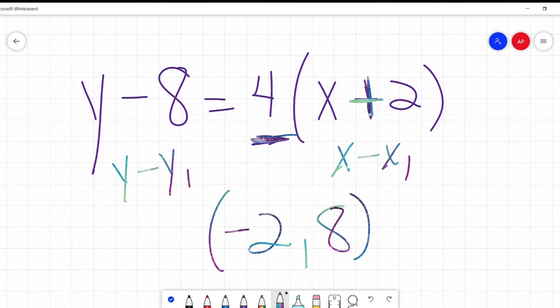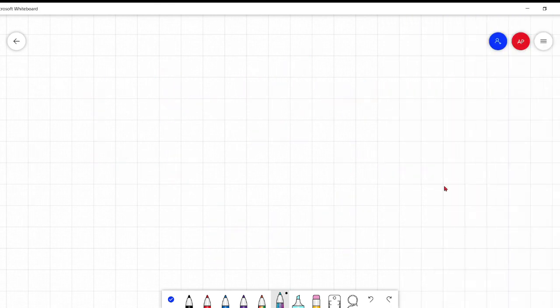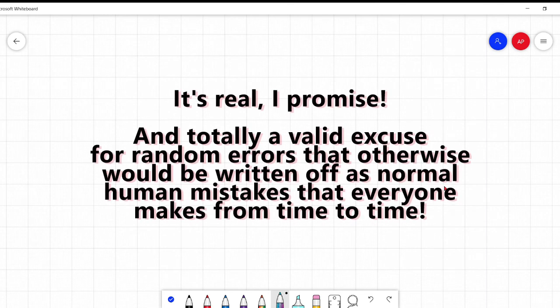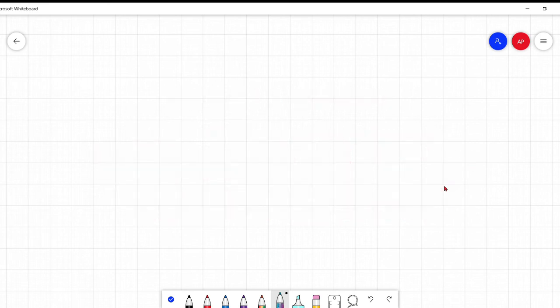I'm sorry if I sound stuffy. The pollen is off the chart these couple weeks where I live. And so it's all I can do not to sneeze in your ear or to sniffle. And I am trying not to make any egregious errors, but the pollen does give me I call it allergy brain. So I promise it's a thing. It's an actual medical condition. It's a technical term. Look it up. So that was today's lesson on point slope form of a line.